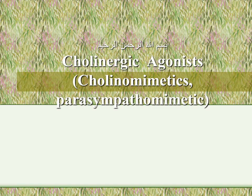Muscarinic receptors have five subtypes: M1, M2, M3, M4, and M5. M1, M3, and M5 are excitatory receptors, while M2 and M4 are inhibitory receptors. The inhibitory receptors act through inhibition of adenylate cyclase, leading to a decrease in cyclic AMP as a second messenger. The excitatory ones stimulate phospholipase C, leading to an increase in inositol triphosphate and diacylglycerol.